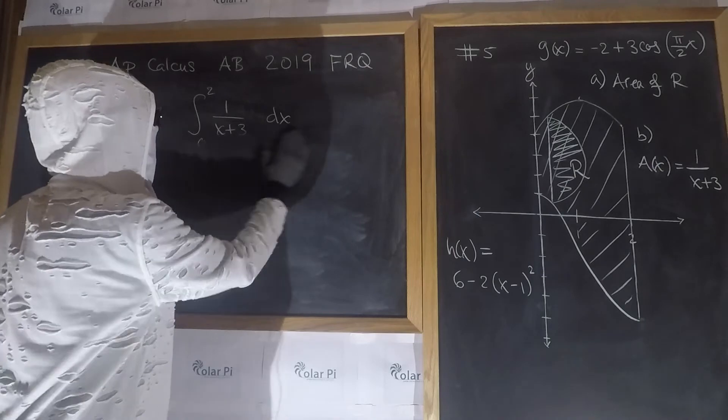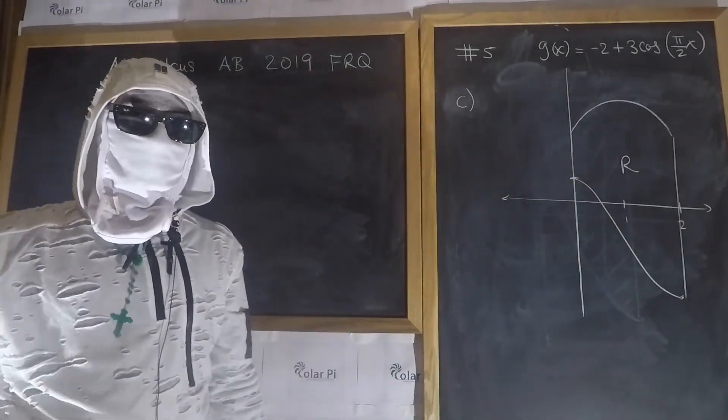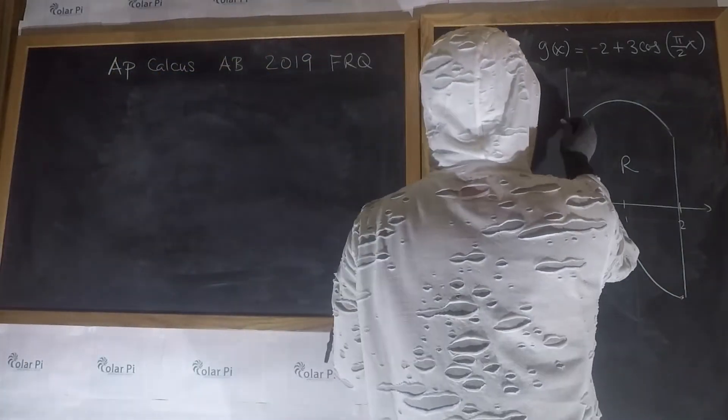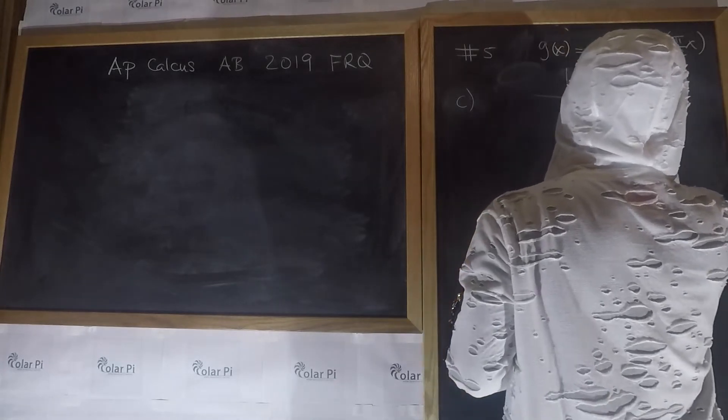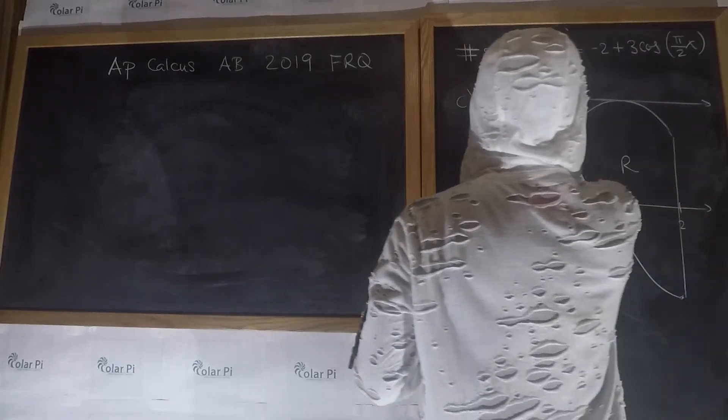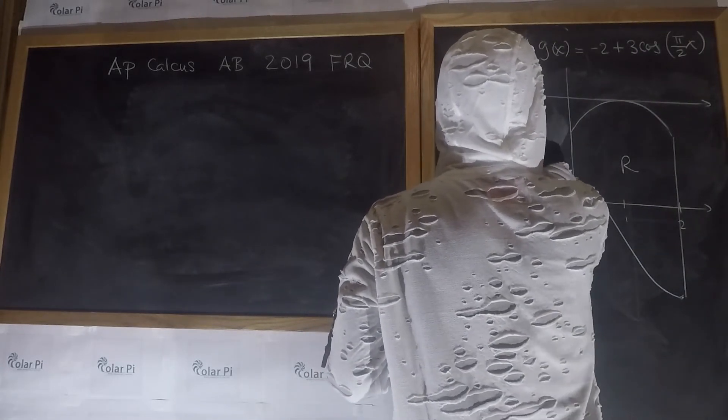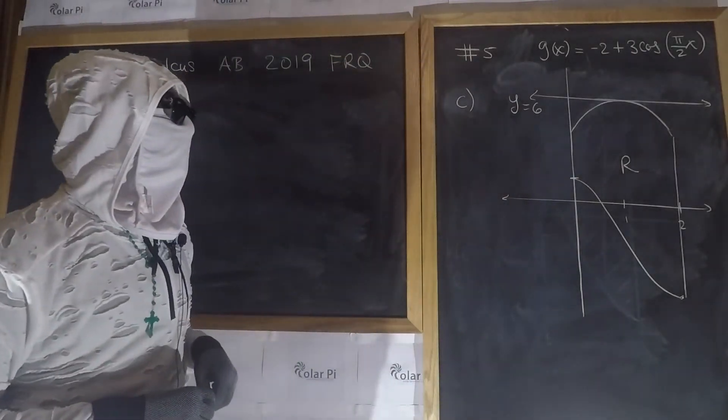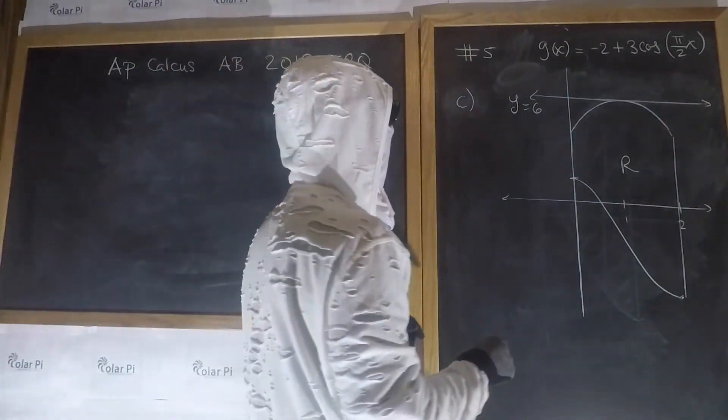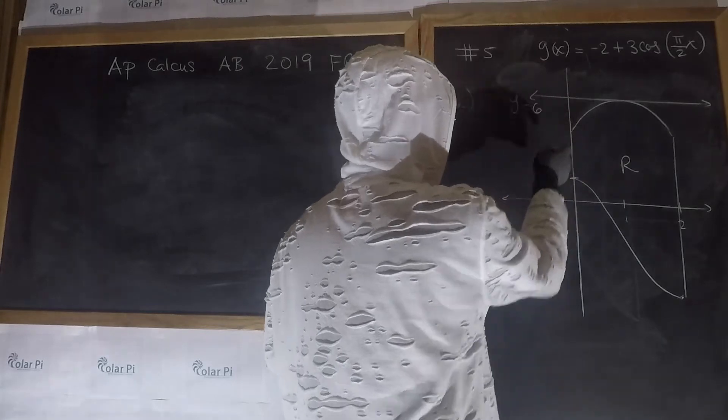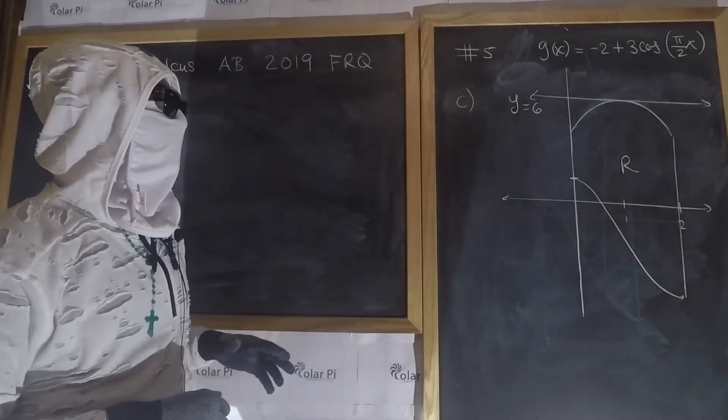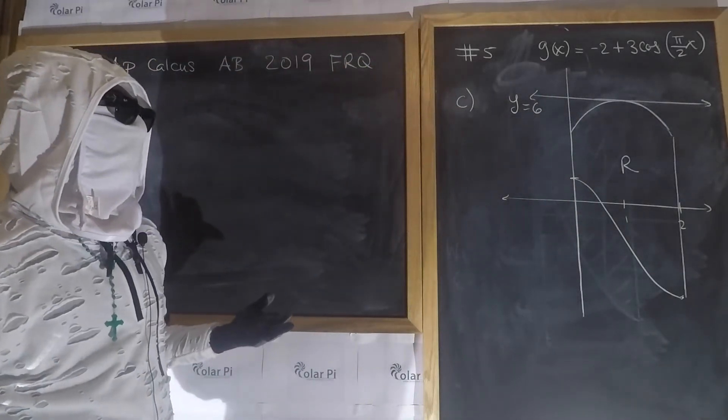For part C, the question is this: we have a horizontal line y equals 6, so that's like here, and we are rotating this region R about that line, and we're asked to find the volume of that solid.